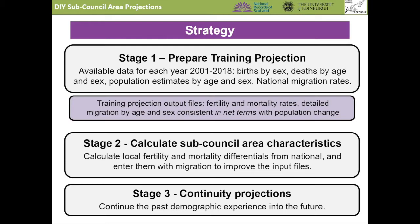In the training projection, PopGroup calculates for us characteristics of each area that we did not know before, for each year in the past. It does this by comparing births to the number of women at each age to compute each local area's fertility rate. It also compares the deaths with the population and its age composition to compute each local mortality rate. And most importantly, it computes the impact of migration at each age.